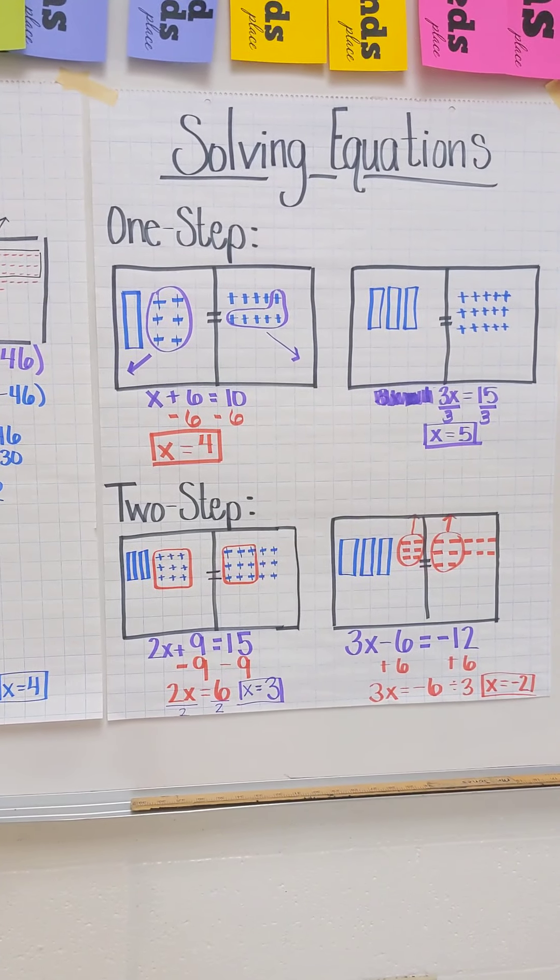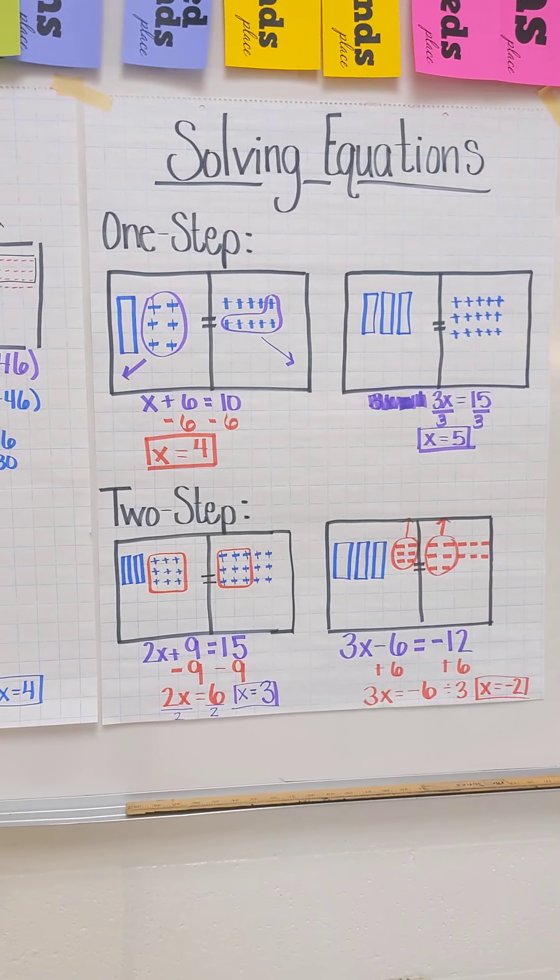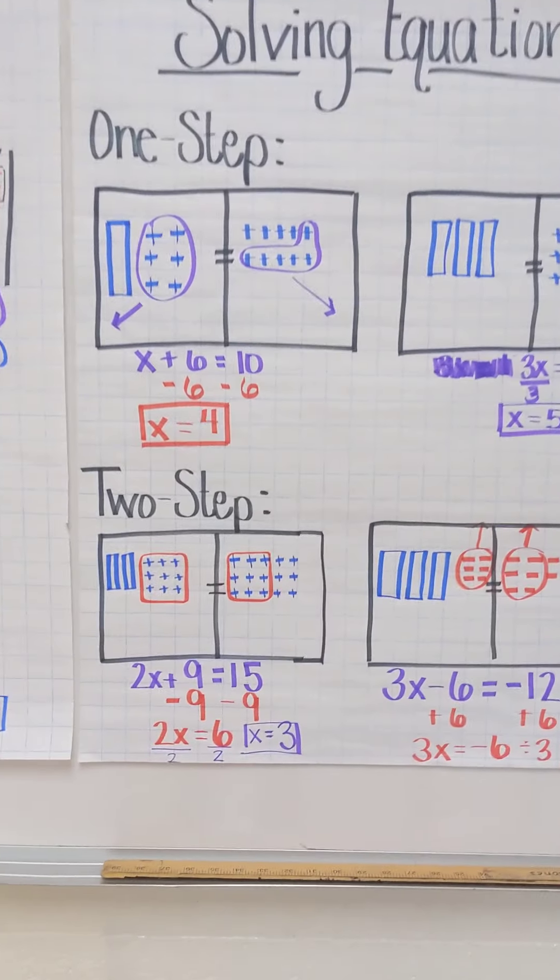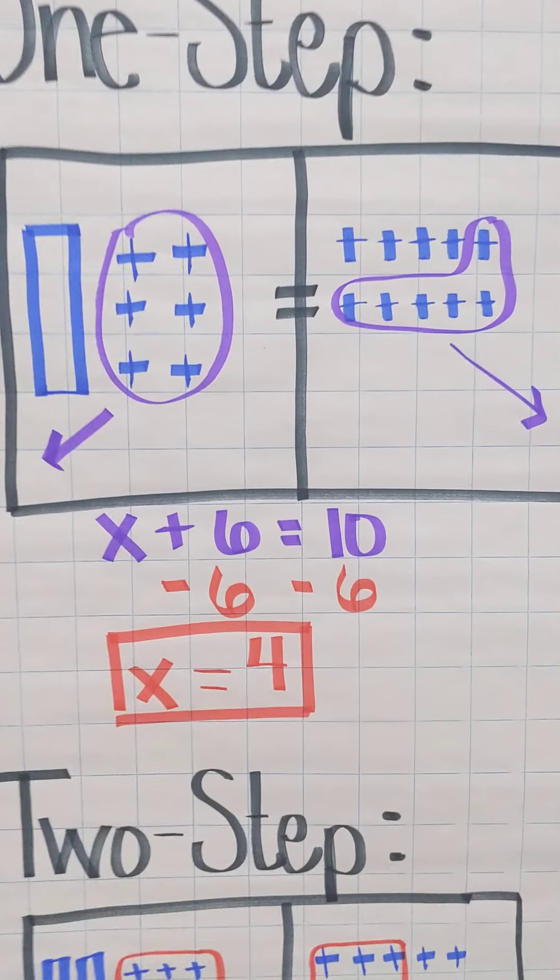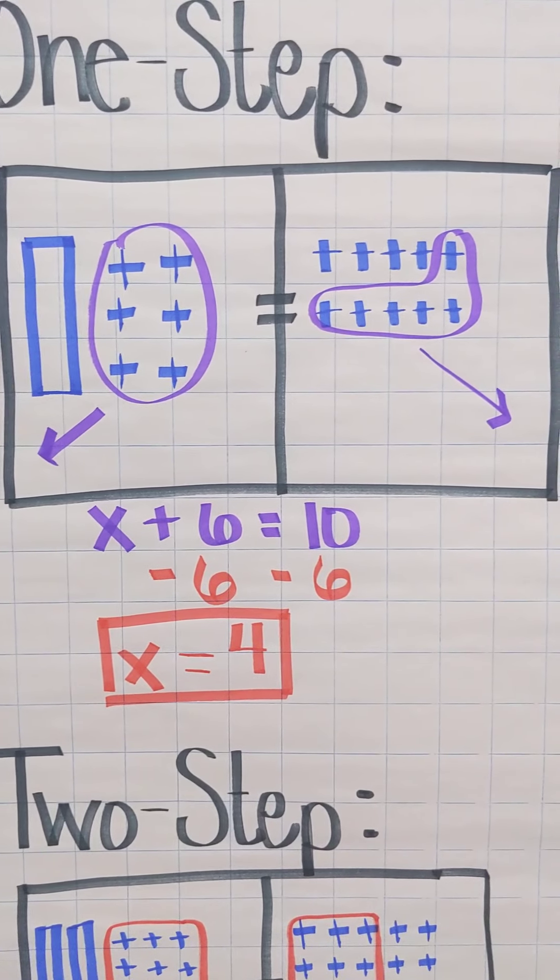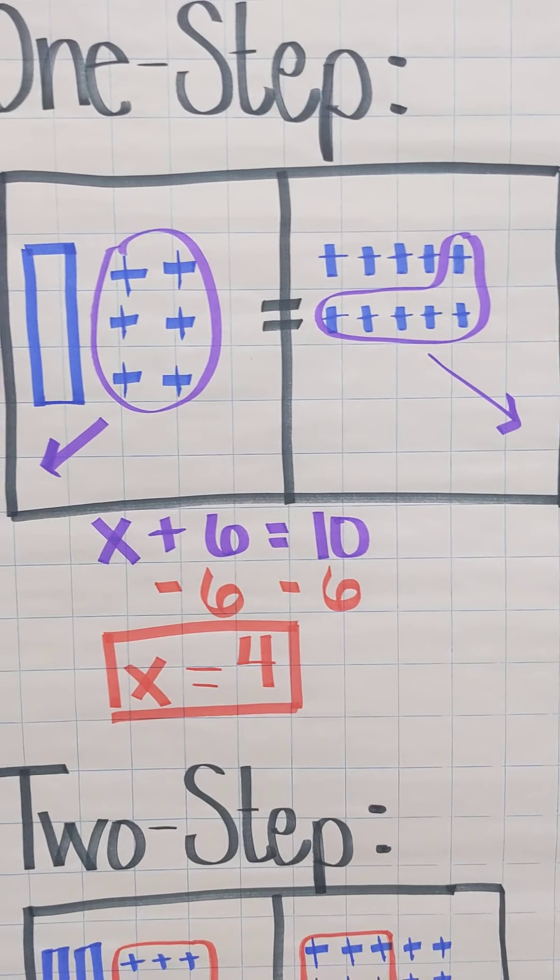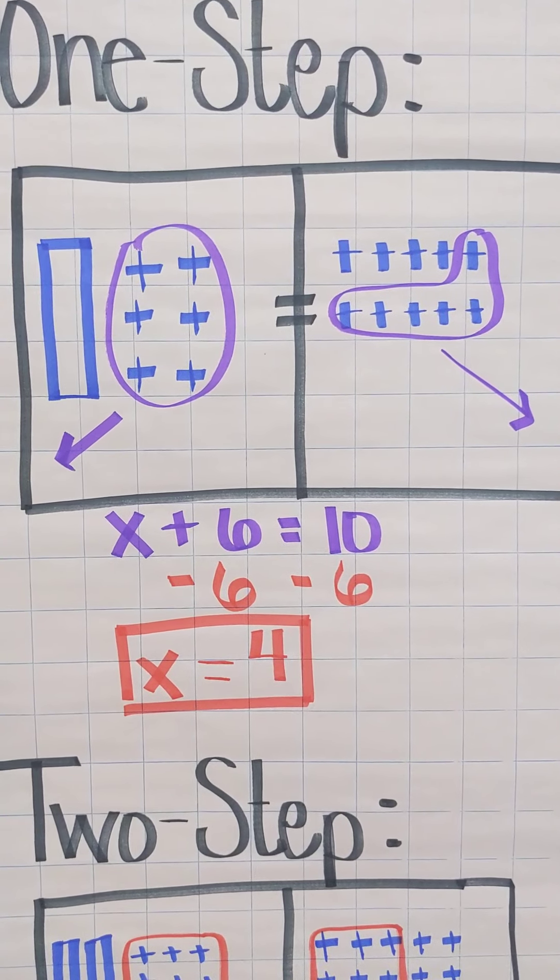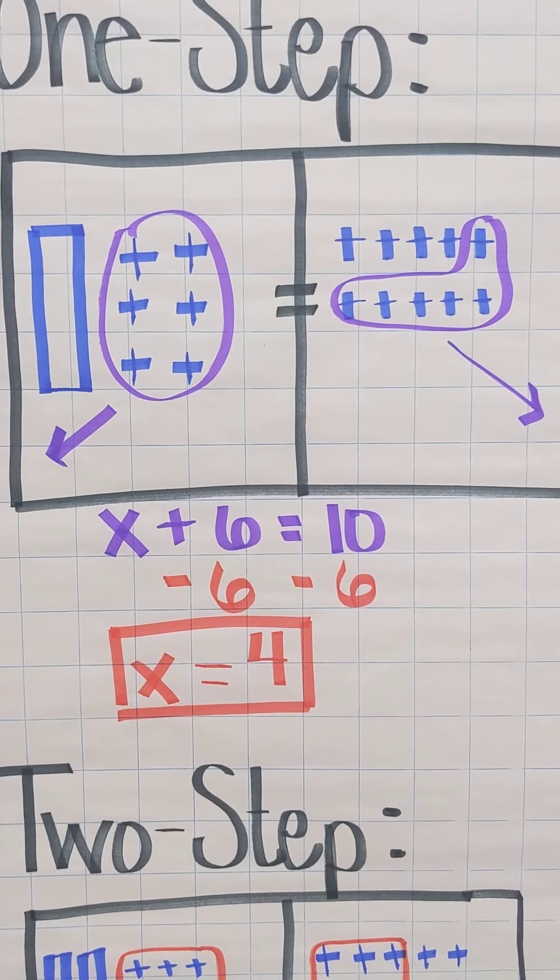What you see in those black boxes, that is the algebra tiles. I'm going to zoom in just a little bit so you can get a better picture. Those long skinny rods are going to be the x values. And then those pluses or those minuses, they represent the units.